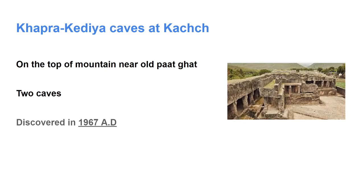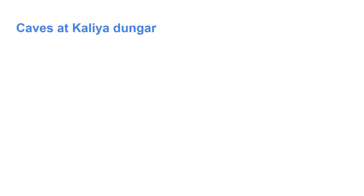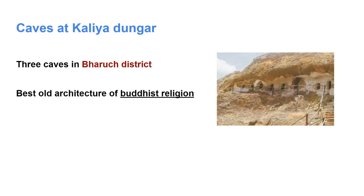The last one is the Caves at Kalya Dungar. There are 3 caves in Kalya Dungar at Jagadiya Taluka in Bharuch district. These are the best old architectural specimens of Buddhist religion. The architecture of these caves is marvellous — an 11-feet-high statue of a lion with 2 bodies and 1 mouth in the form of a pillar has been carved from a single rock.